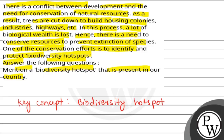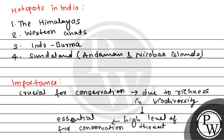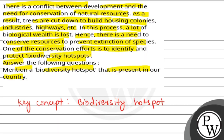So the answer to the question — mention a biodiversity hotspot present in our country — is: the hotspots in India are the Himalayas, Western Ghats, Indo-Burma, and Sundaland. I hope you understood it well. Best of luck.